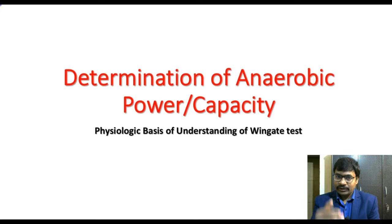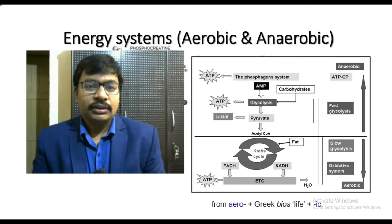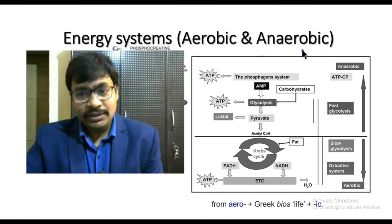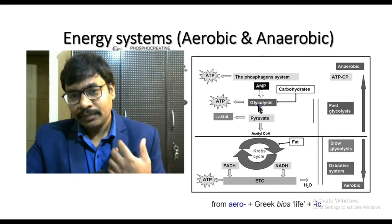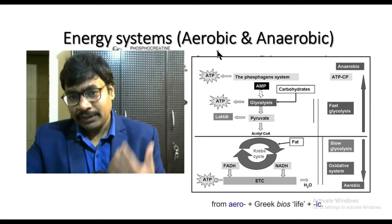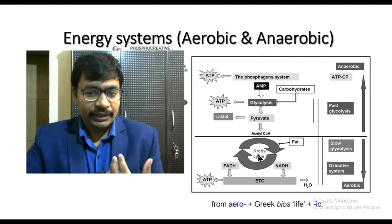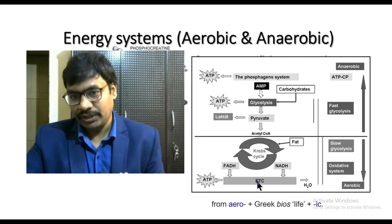Before going into the procedure of the Wingate test, I would throw light on the energy systems — the basis of the anaerobic power of an individual. As we know, we have aerobic and anaerobic systems. The aerobic metabolic pathway involves glycolysis, the Krebs cycle, and the electron transport chain.